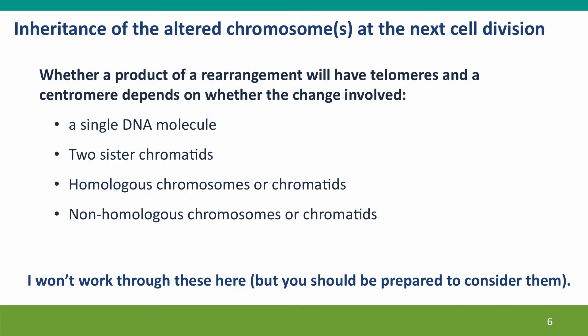I've only shown you a couple of examples. Whether the outcome of some sort of rearrangement event is going to produce a functional chromosome is going to depend on a number of factors — on whether the change involved one DNA molecule or two sister chromatids or homologous chromosomes or chromatids, or whether it involved non-homologous chromosomes or chromatids. I'm not going to take the time to work through all of these here, but you can work them out for yourself, and you should be prepared to consider them on quizzes and exams.